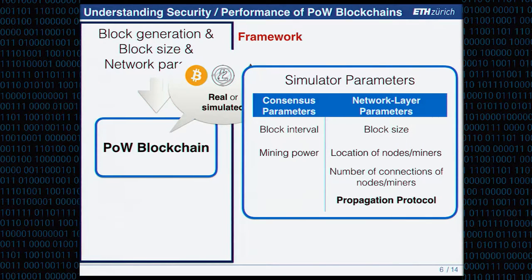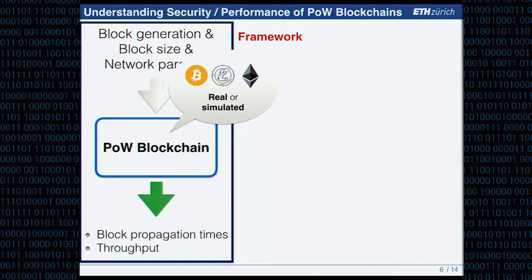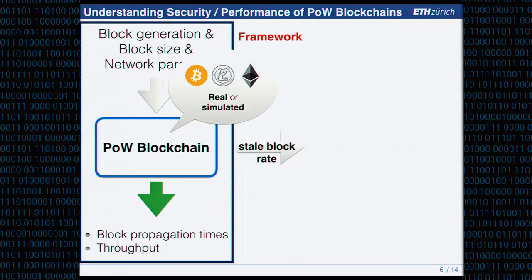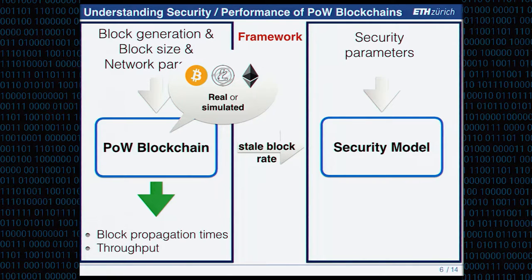We captured the number of TCP connections a miner or node might have, and implemented over four propagation methods currently used in Bitcoin. The key output of the proof-of-work blockchain component is the stale block rate, which quantifies how efficient communication is in the honest network. This stale block rate is then used as input to our second component: the security model.